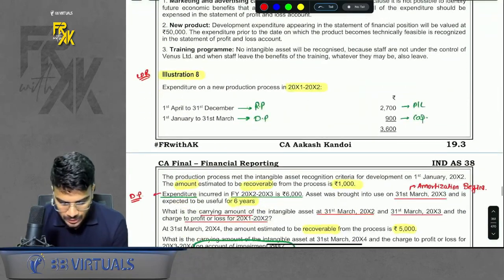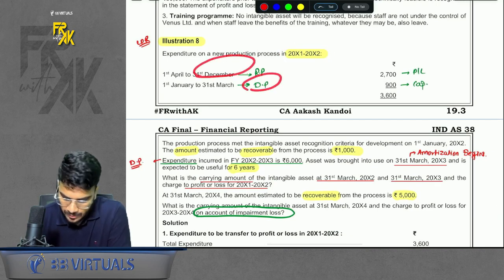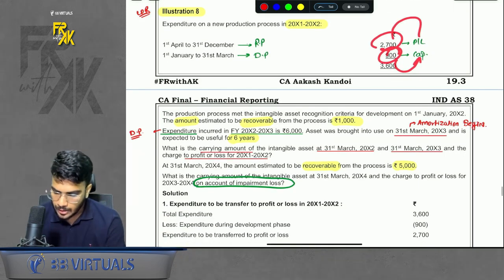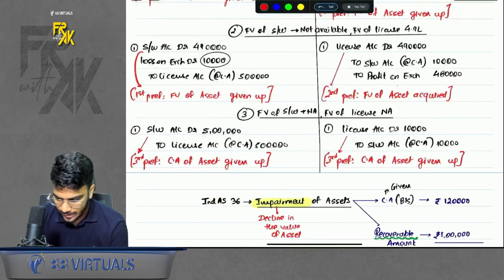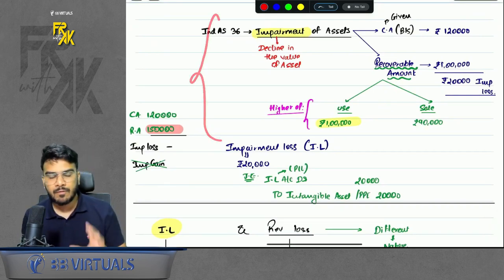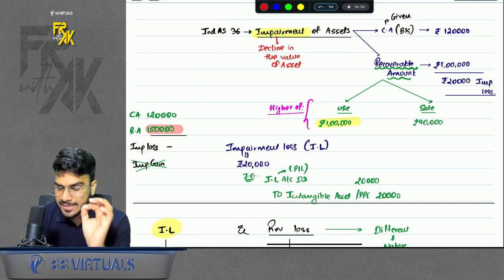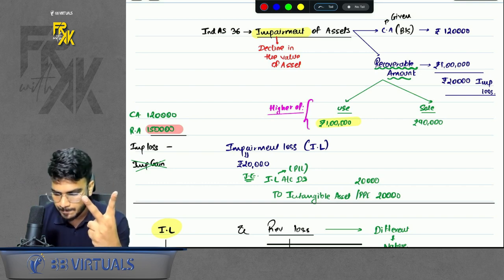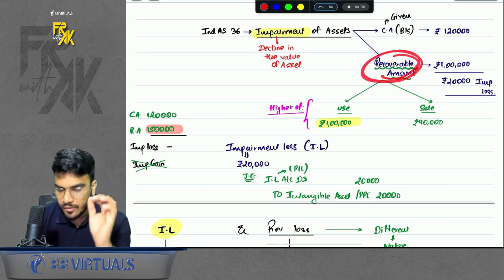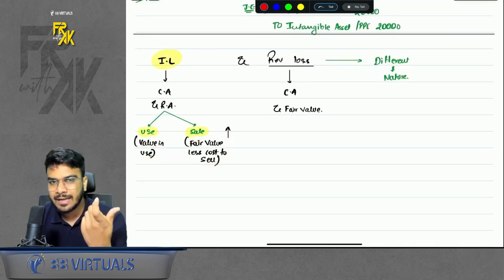Illustration number 8: in year 11-12, you first do some research then development. Research phase expenses transfer to profit and loss; development phase expenses are capitalized. Recoverable amount was given, so I gave an overview of impairment. Impairment is defined in Ind AS 36 and the basic meaning is decline in the value of an asset. To check for impairment, you find two values: carrying amount and recoverable amount. Recoverable amount is the higher of value in use and fair value less cost to sell.